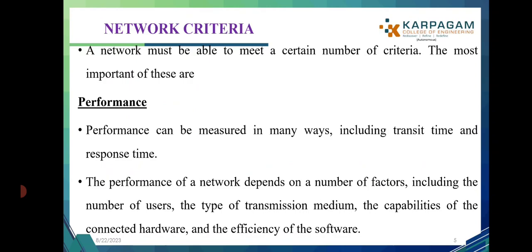The next network criterion is reliability. In addition to accuracy of delivery, network reliability is measured by the frequency of failure — that is, the time it takes a link to recover from a failure. Once a failure occurs, the time taken to detect and recover from it should be minimal. Finally, network security includes protecting data from unauthorized access, damage, and development.